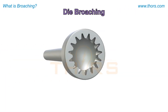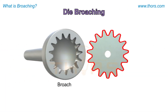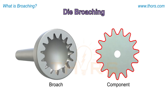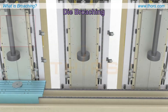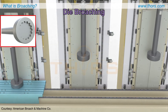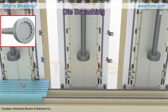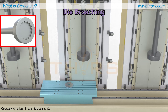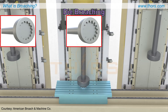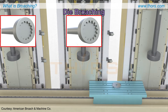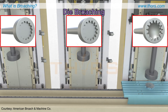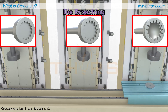Die broaching uses a broach to cut externally on the component and is used for high volume production. A die broach has a set of internal teeth that engulf the workpiece to produce the shape on the external surface in one single pass. Either the workpiece or the tool holder is indexed to subsequent die broaches until the final shape is produced.